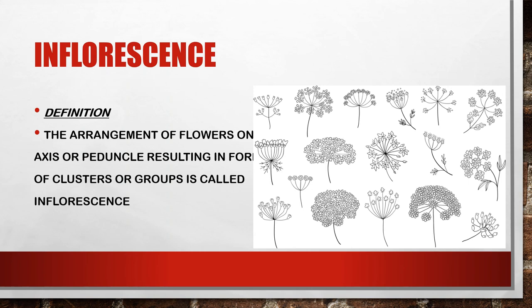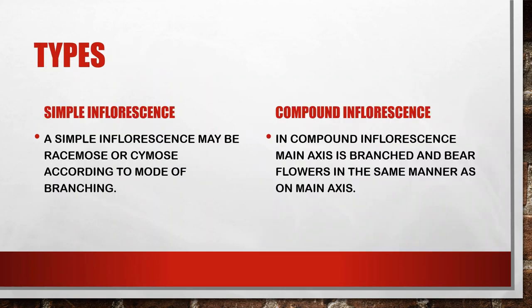We are going to discuss the types of inflorescence. There are two types: simple inflorescence and compound inflorescence. Simple inflorescence may be racemose or cymose according to the mode of branching. In compound inflorescence, the main axis is branched and bears flowers in the same manner as on the main axis.